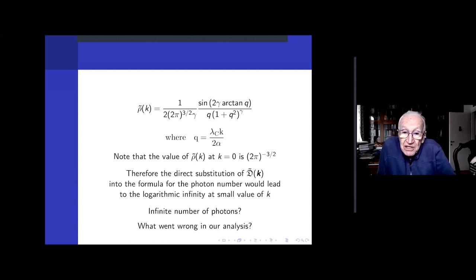Here is ρ translated into momentum space. It turns out that this Fourier transformation can be analytically performed. Here is the formula, which is not complicated—it is quite simple when you use a new variable q, which is a dimensionless variable: the Compton wavelength times k divided by 2α. This is my definition of q, and ρ(k) depends on k through q. The value at k equals zero is 2π to the power of minus three halves, which comes from the conventional definition of the Fourier transform.